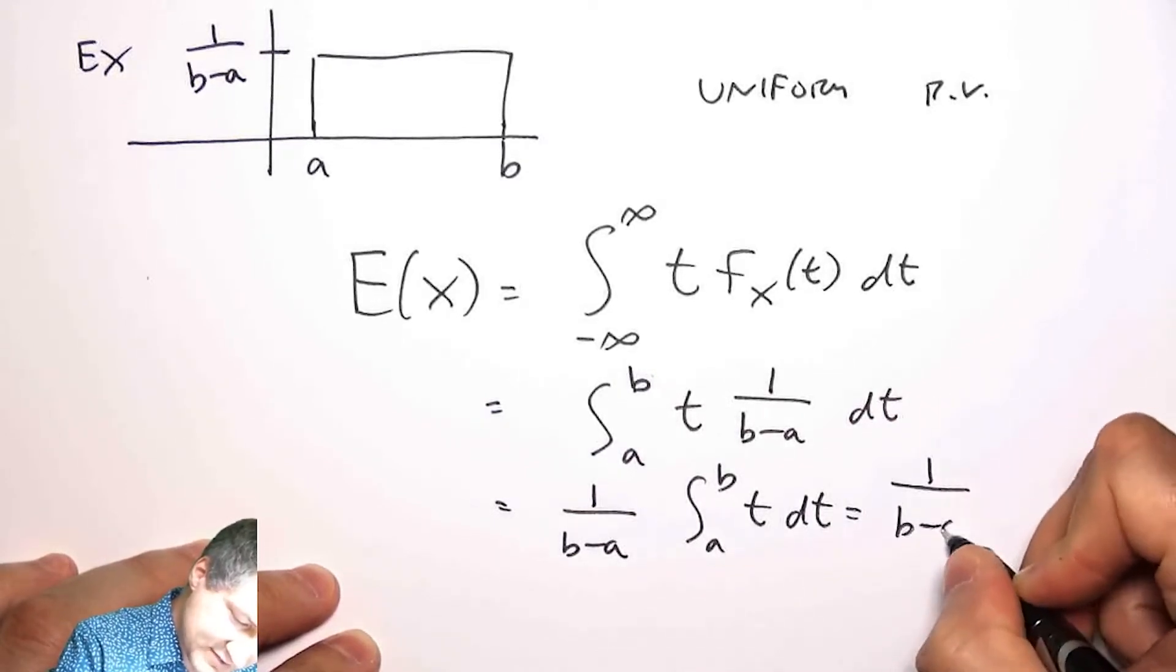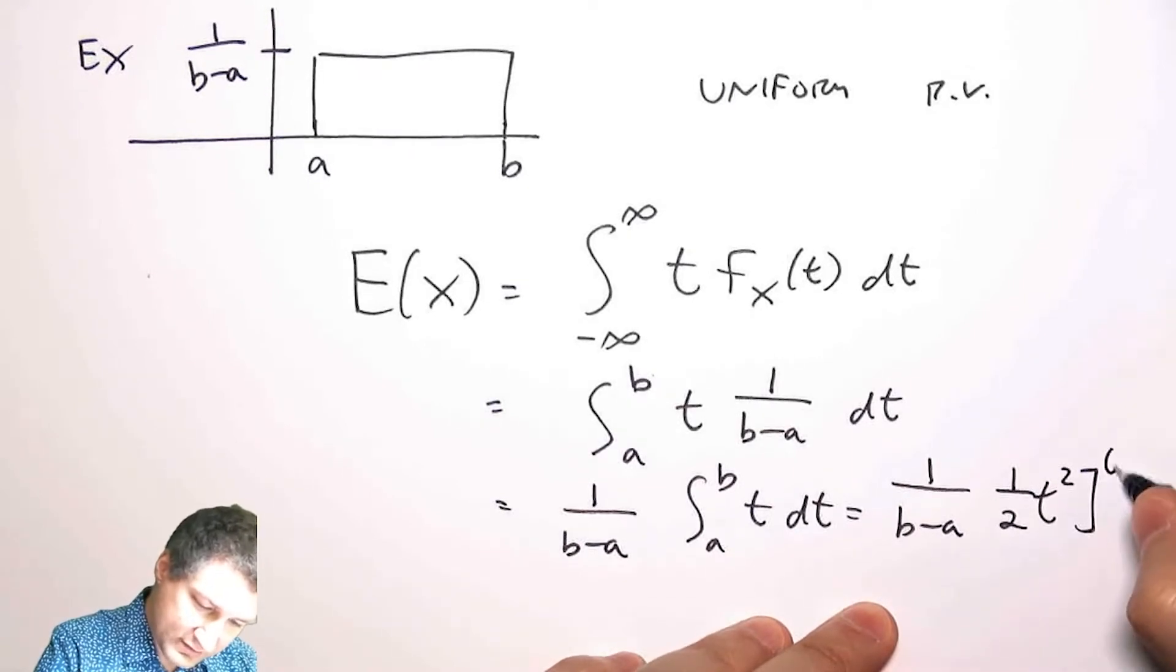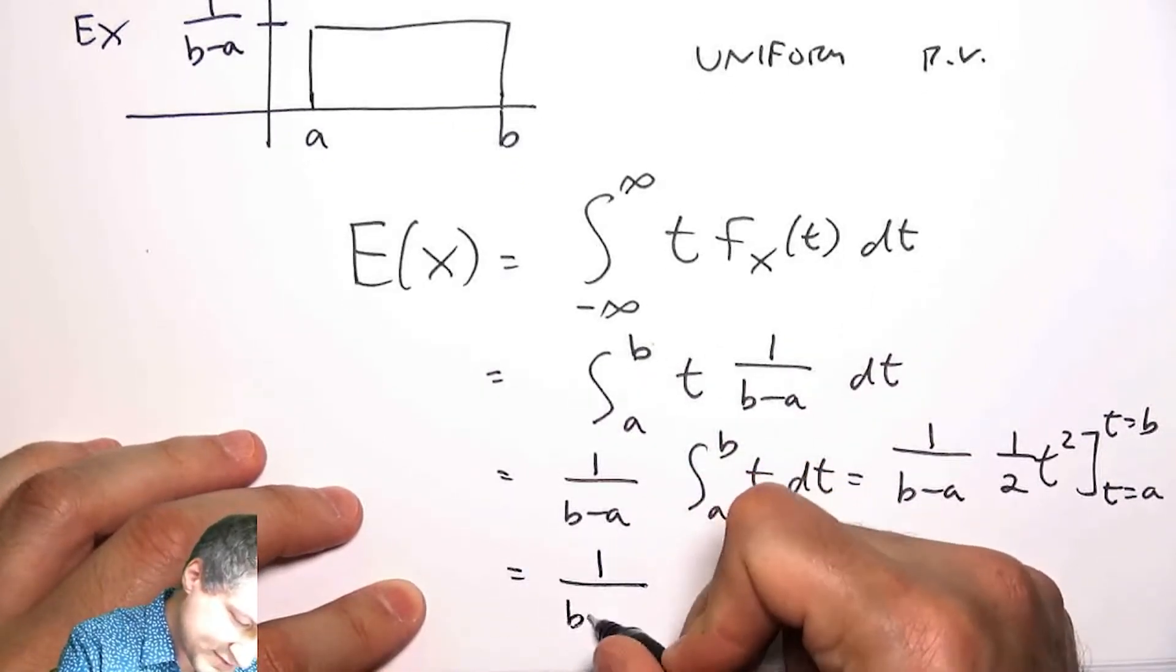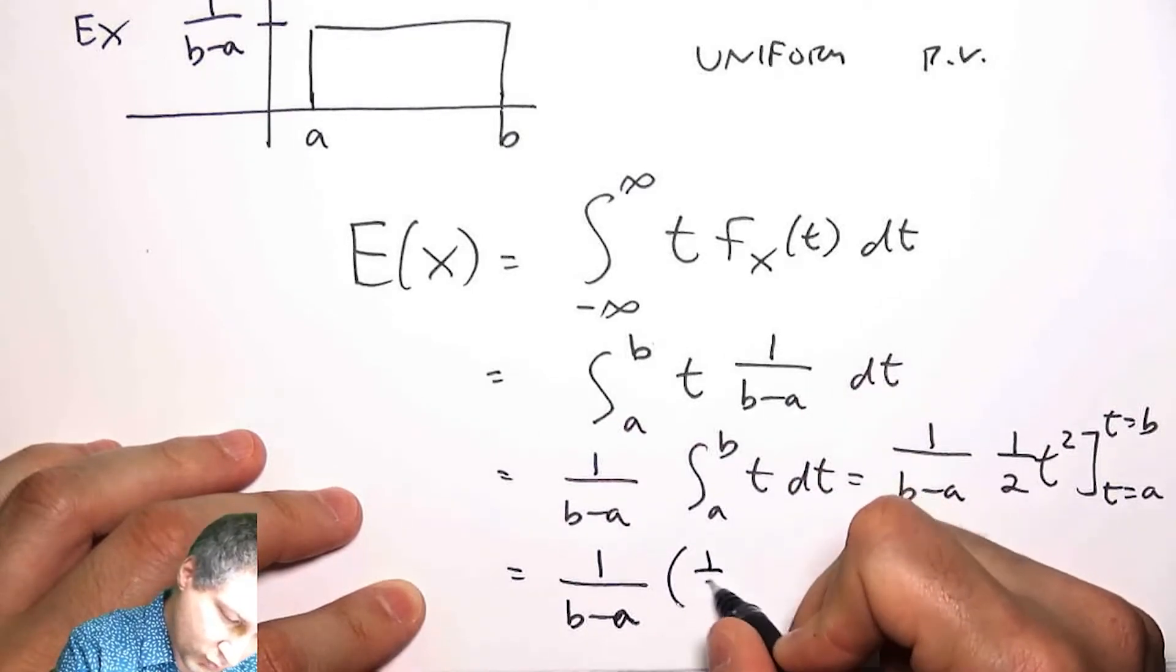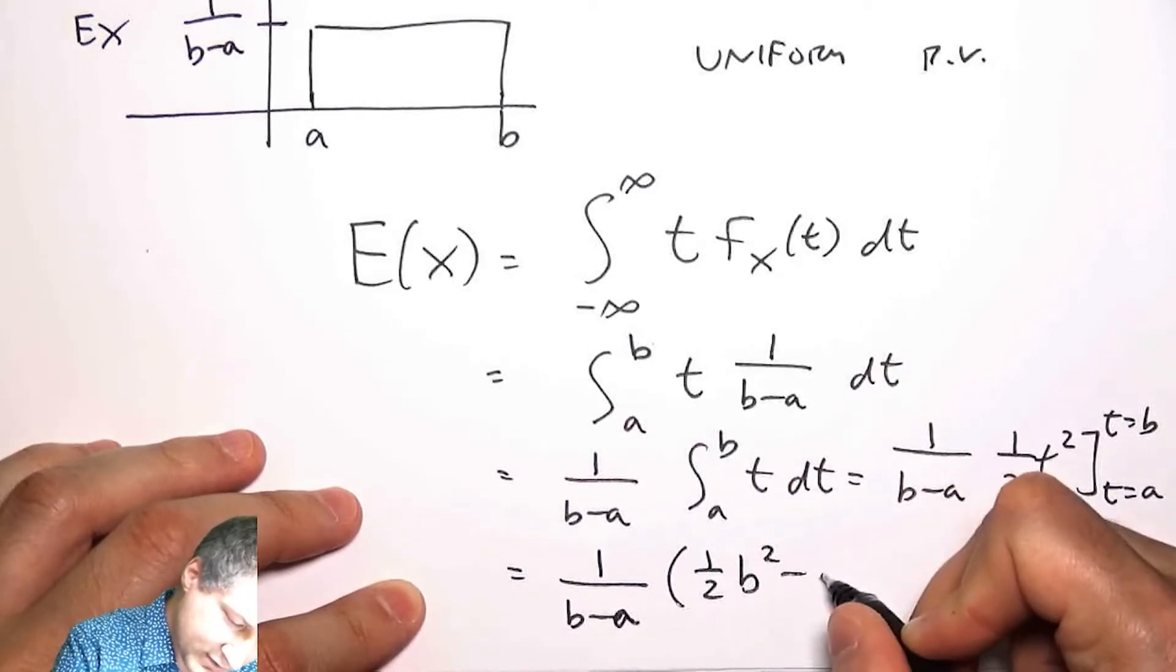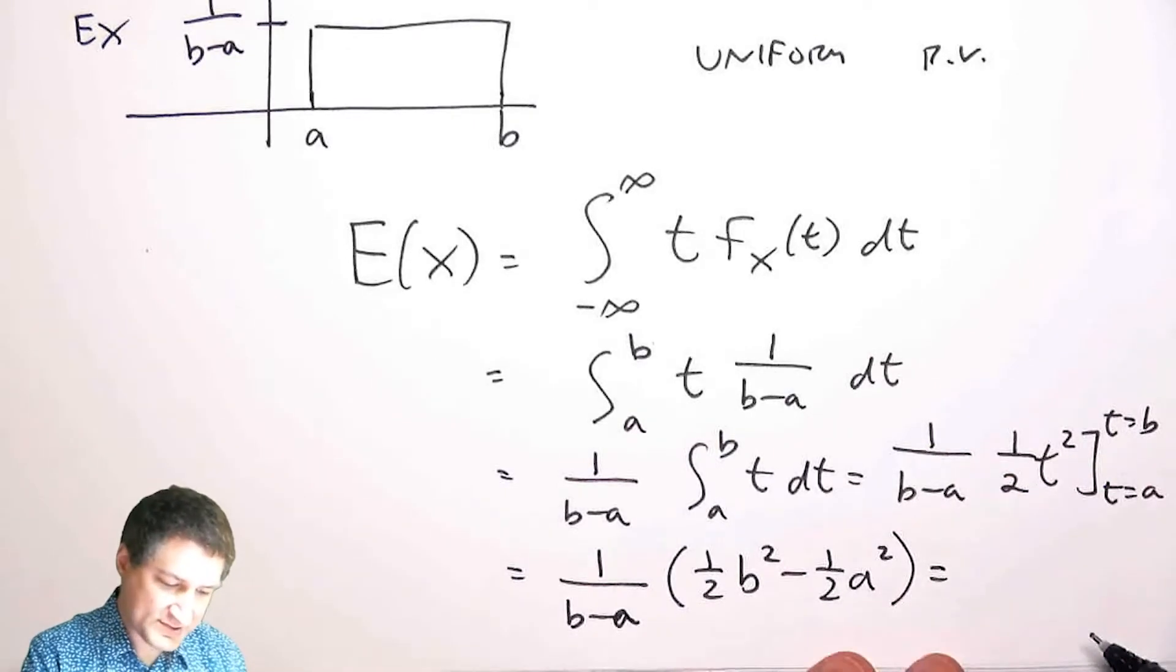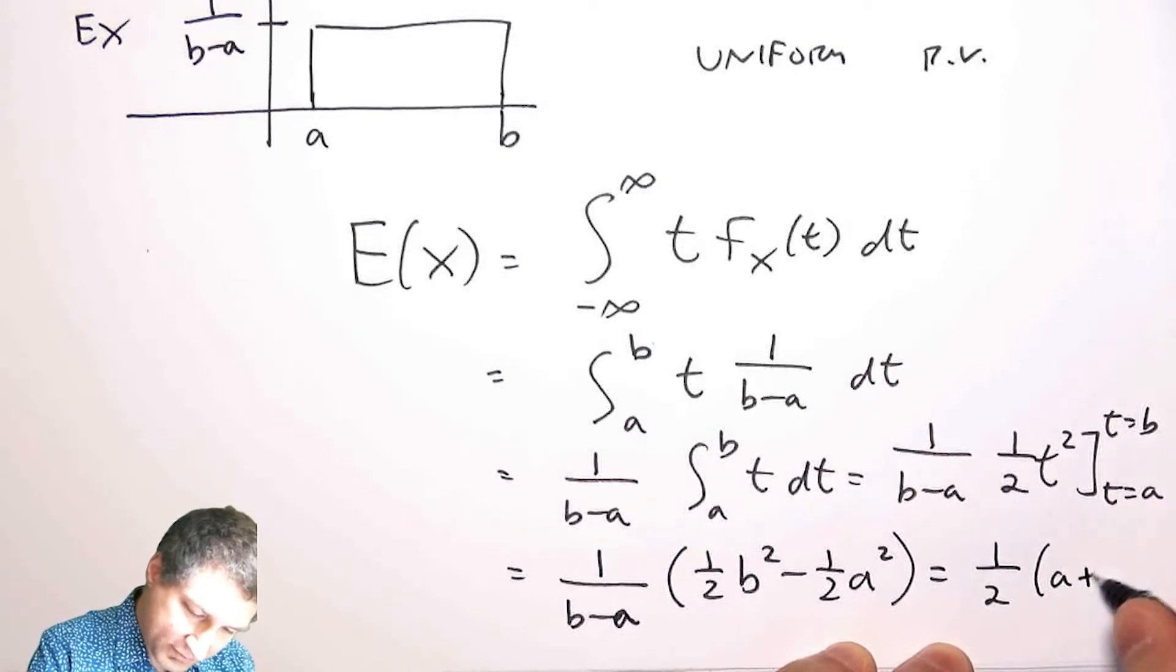So I have 1 over b minus a. The integral is 1 half t squared, from t equals b to t equals a. Then I have 1 over b minus a times, this part is 1 half b squared minus 1 half a squared. And by doing some factoring, I can kind of reduce this to 1 half of a plus b.